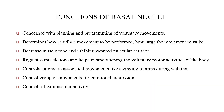The functions of the basal ganglia: basal ganglia are concerned with planning and programming of voluntary movements. It determines how rapidly and how large a movement must be performed. It decreases muscle tone and inhibits unwanted muscular activity. It regulates muscle tone, smoothens voluntary motor activities, controls autonomic associated movements like arm swinging during walking, controls group movements for emotional expression, and controls reflex muscular activities.